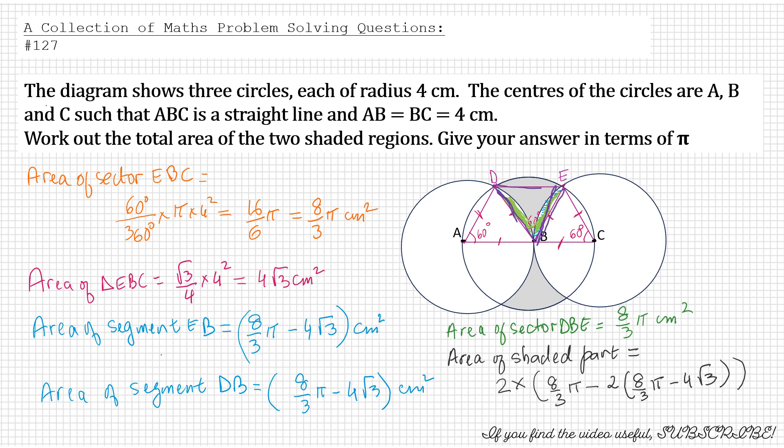And area of this sector, and then subtract the green bits. If you subtract the green bits from there, you should get the area of one shaded part. And then if you multiply it by 2, you will get the area of both the shaded parts.